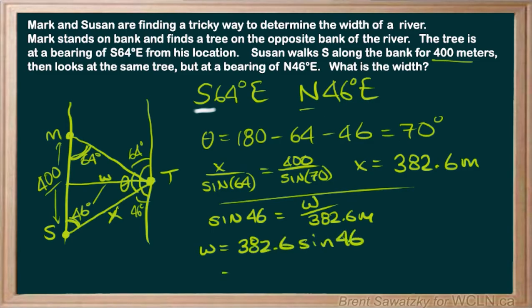And again, pull out that calculator. And 382.6 times sine of 46, 275. And that was in meters. So they used their strategy and quite a good one it turned out to be because they were able to figure out the width of that river, 275 meters.